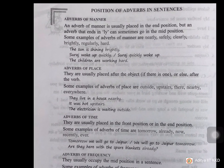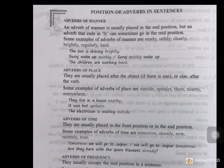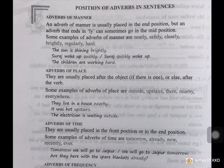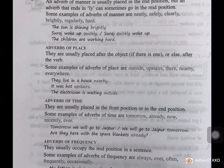Position of adverbs in sentences. Adverbs of manner are usually placed in the end position, but an adverb ending in 'ly' can sometimes go in the mid position also. Examples of adverbs of manner: neatly, safely, clearly, brightly, regularly, hard. 'The sun is shining brightly.' 'Suras woke up quickly' or 'Suras quickly woke up.' Adverbs of place are usually placed after the object, if there is one, or else after the verb. 'They live in a house nearby.' 'It was hot upstairs.'